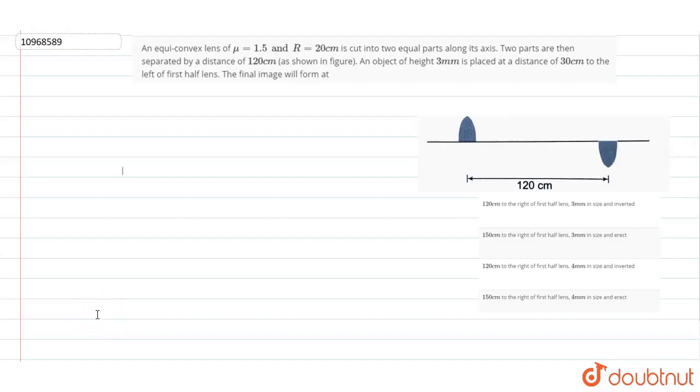So in this question we are asked that an equi-convex lens of μ equals 1.5 and r equals 20 cm is cut into two equal parts along its axis. The two parts are then separated by a distance of 120 cm as shown in the figure. An object of height 3 mm is placed at a distance of 30 cm to the left of the first lens. The final image will be formed at...